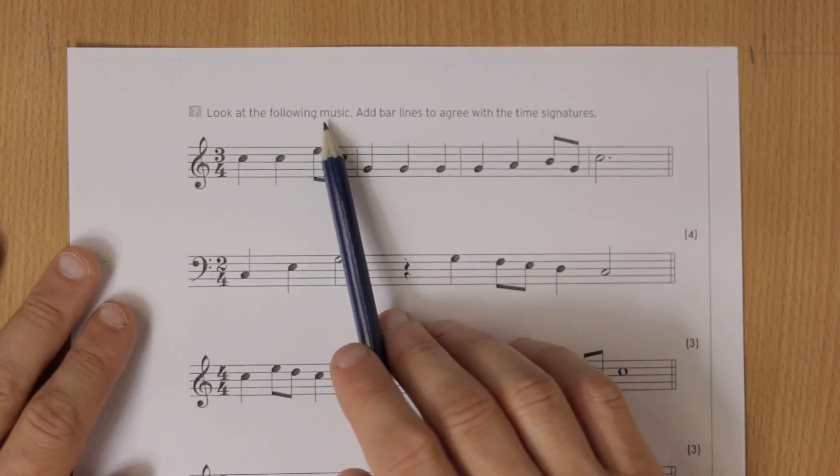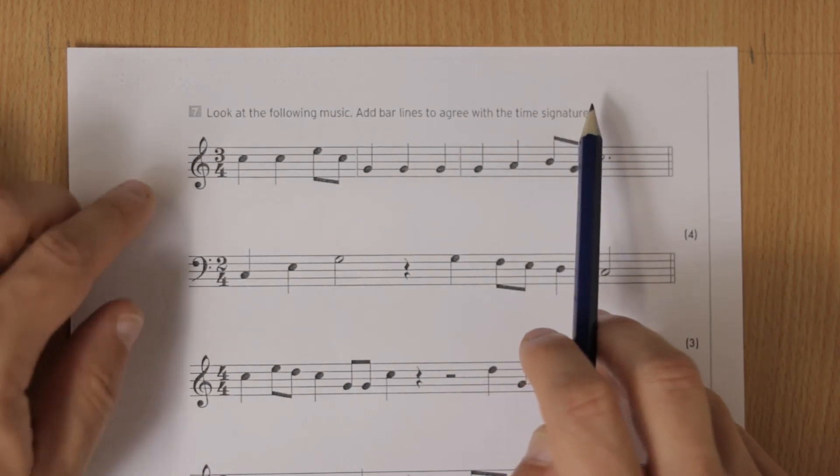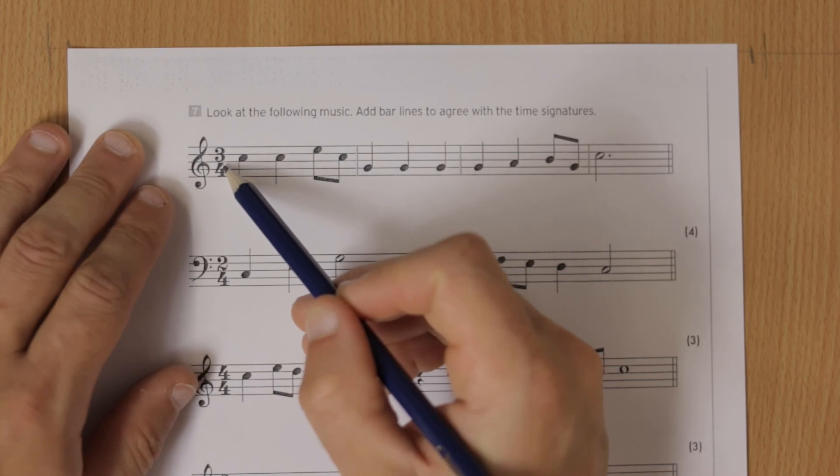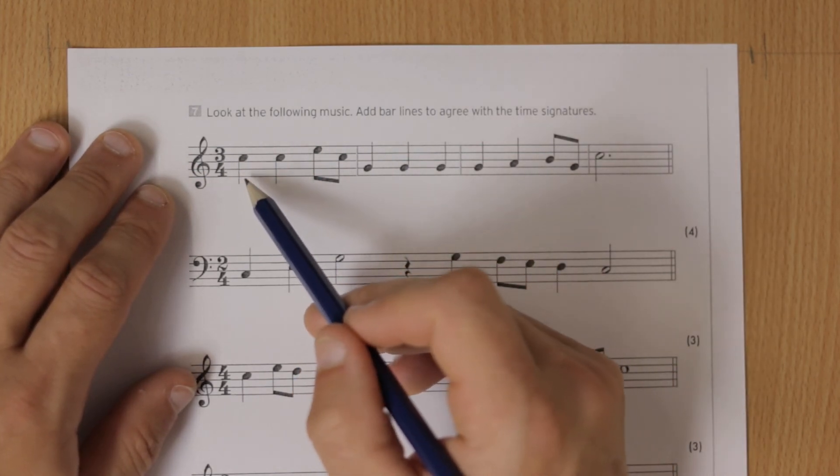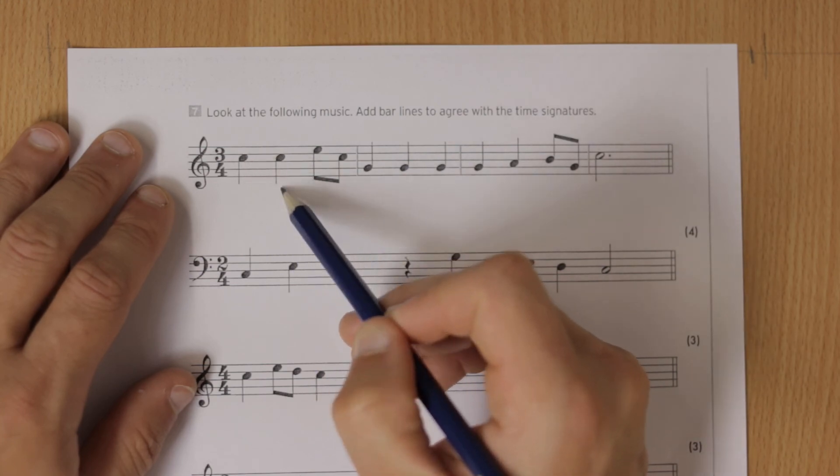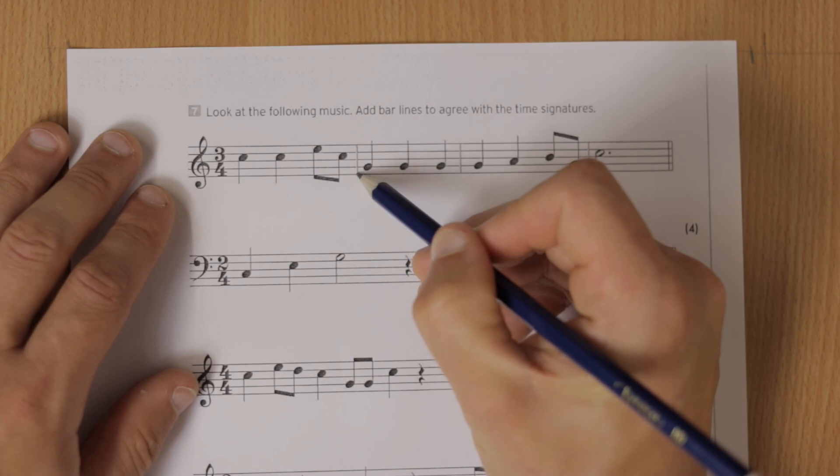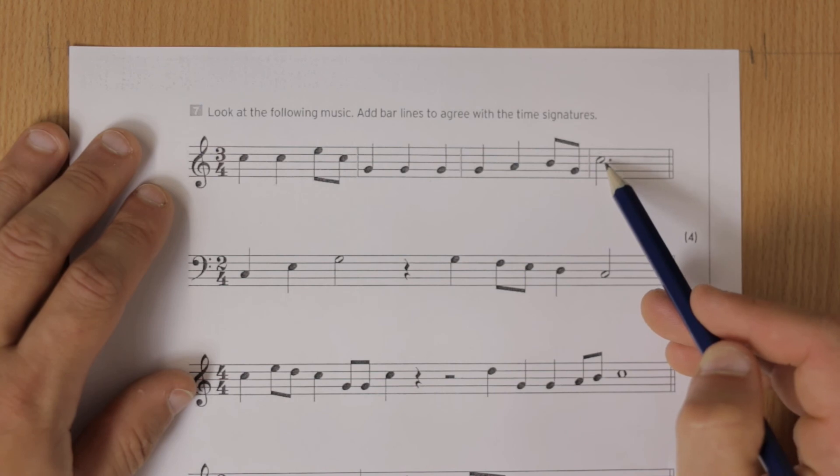Look at the following music, add bar lines to agree with the time signature. We look at the time signature - it says three-four. So we know we need three crotchet beats in each bar. We just start from the beginning and count three beats: one-two, half-half is three. So we add a bar line there. They've done it for you: one-two-three, bar line there, one-two-three, bar line, and then there's one-two-three in those dotted minims.